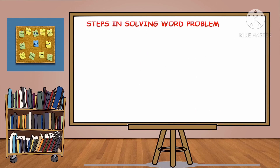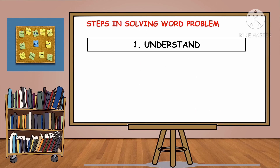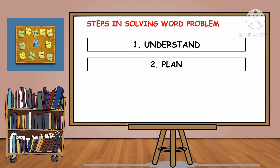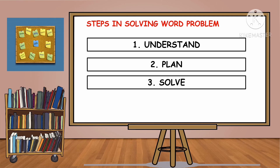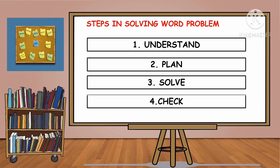These are the steps in solving word problems. First step: understand. Second: plan. Third: solve. And the fourth step is to check. Let us further discuss these four steps in solving word problems.